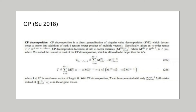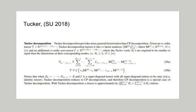Tucker decomposition provides more general factorization than CP decomposition. Given an M-order tensor T, Tucker decomposition factors it into M factor matrices and an additional R-N order core tensor C. When the core tensor C is a super-diagonal identity tensor, Tucker decomposition reduces to CP decomposition — making CP a special case of Tucker. Tucker decomposition is therefore a superset of CP compression, with comparable dimensionality reduction and reduction in computational load, floating point operations, and parameters.